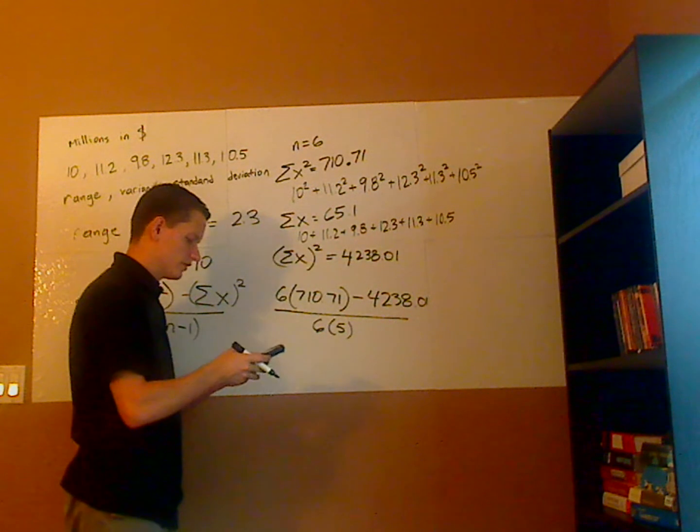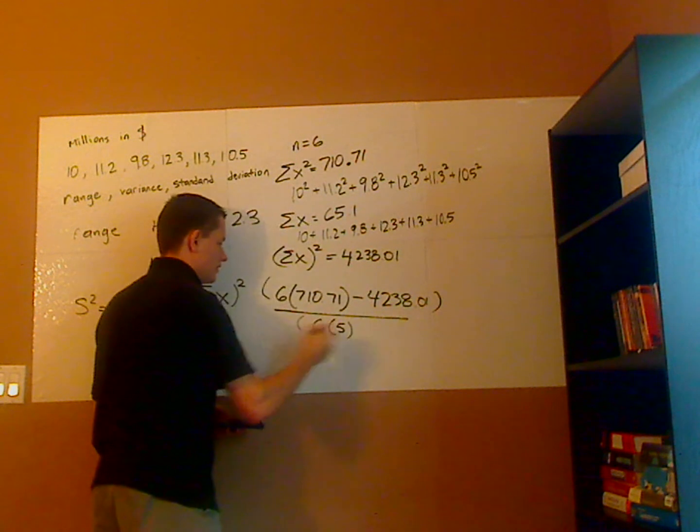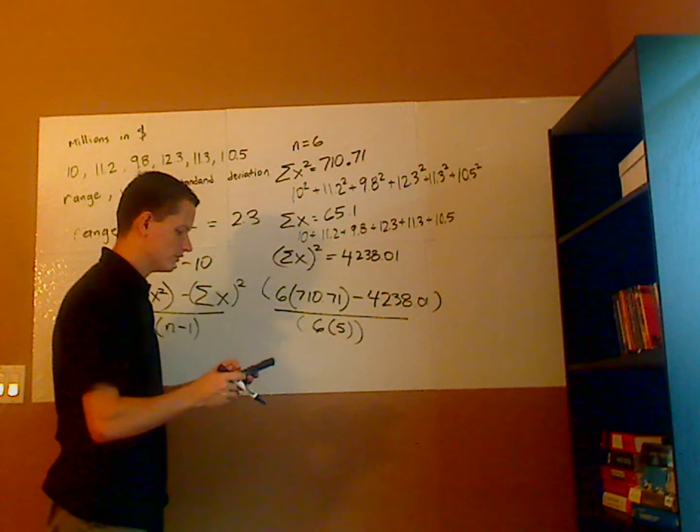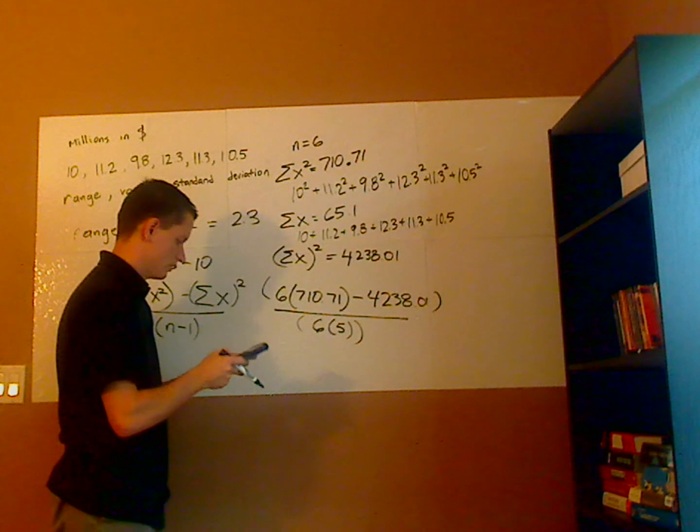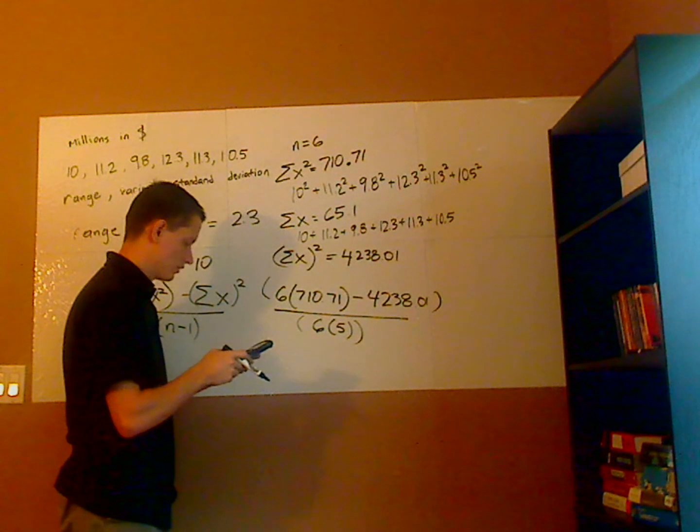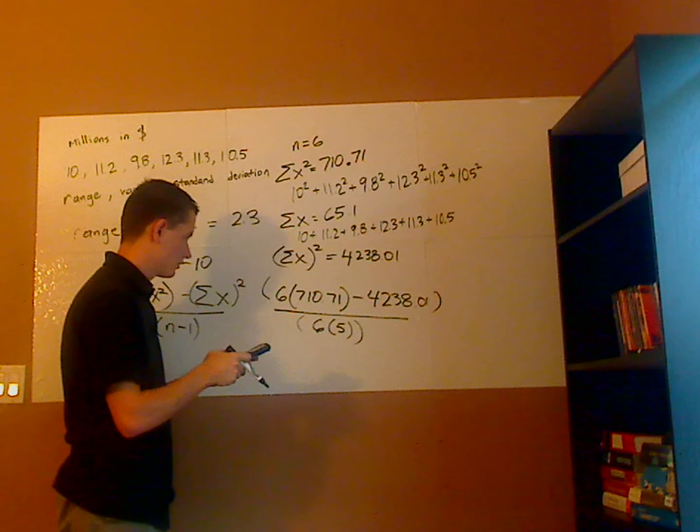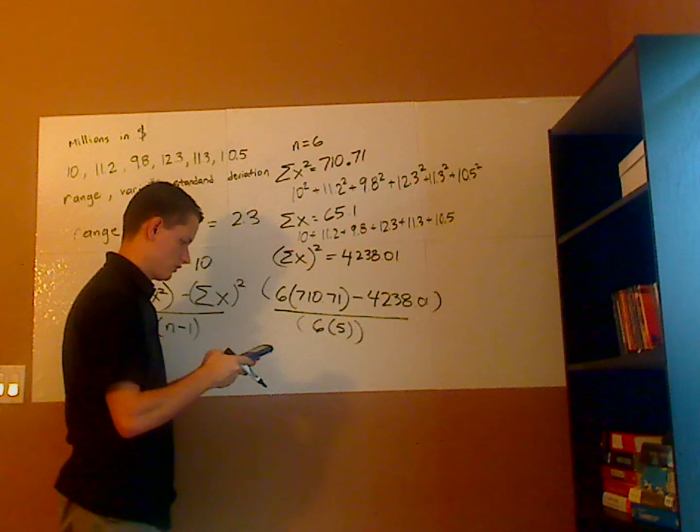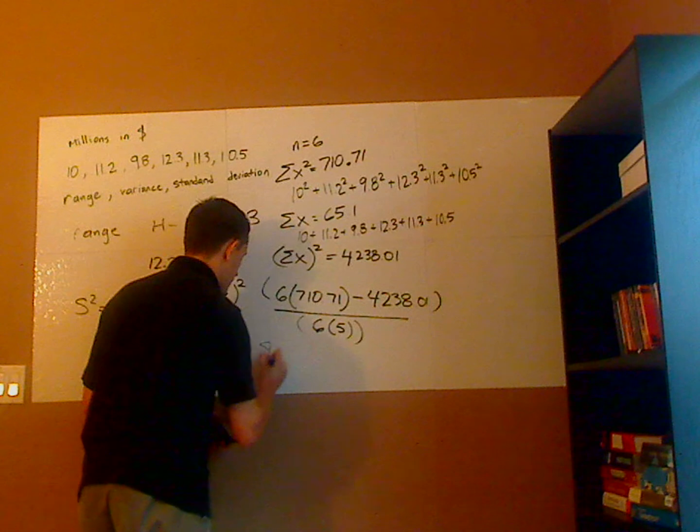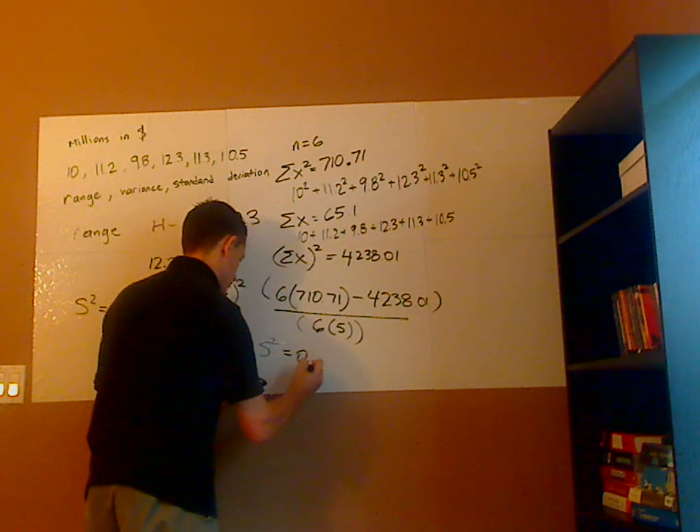So I'm just going to plug that all in once. I'm going to put parentheses around the numerator and parentheses around my denominator when I plug it into the calculator. So I have 6 times 710.71 minus 4,238.01, and I get for the variance I get 0.875.